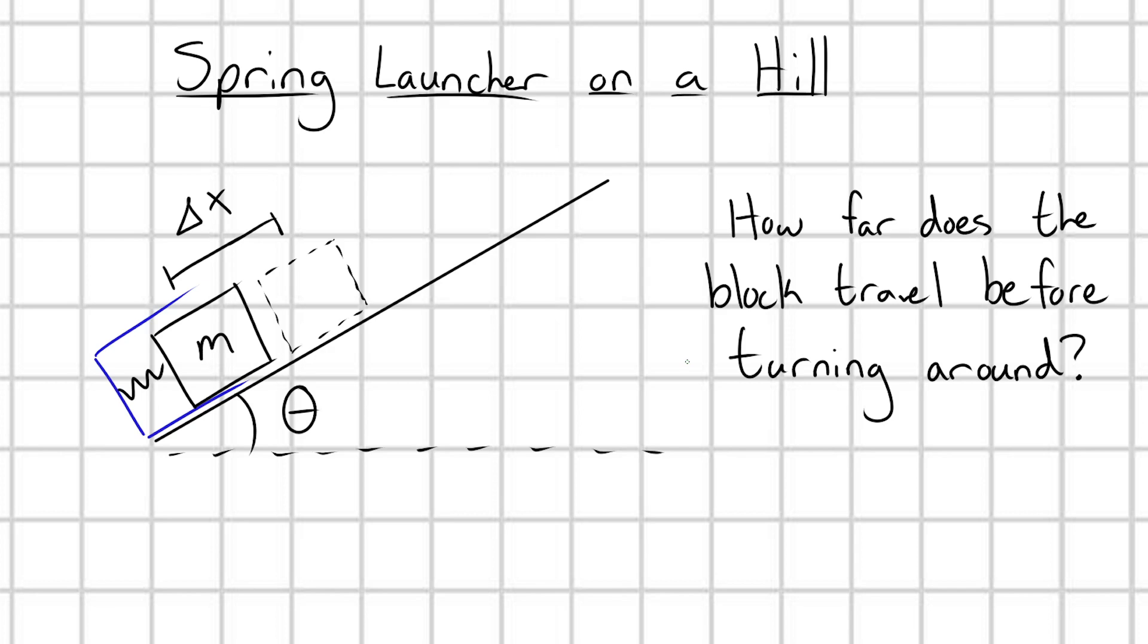and then it launches the block up the side of the hill. Keep in mind that this hill is frictionless, and what we want to know is how far does the block travel up the side of the hill before turning around. And what we're going to see is that we can use the conservation of mechanical energy to effectively trivialize this whole problem.